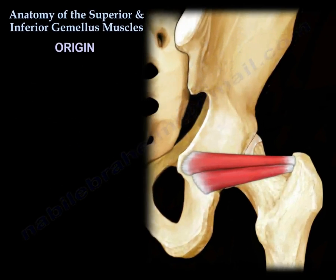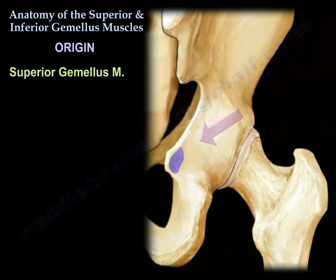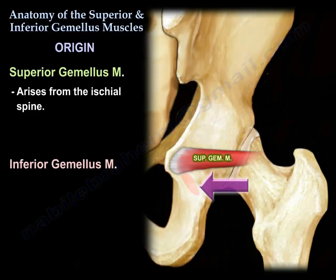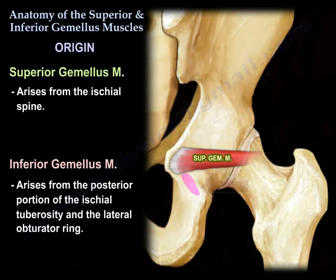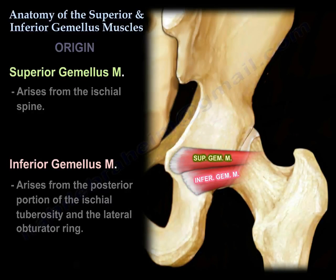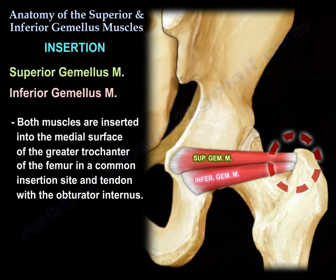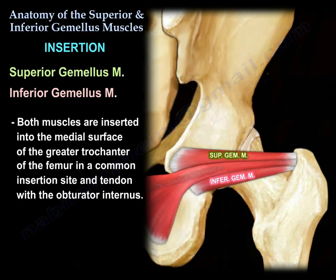Origin: the superior gemellus arises from the ischial spine. The inferior gemellus arises from the posterior portion of the ischial tuberosity and the lateral obturator ring. Both muscles are inserted into the medial surface of the greater trochanter of the femur, in a common insertion site and tendon with the obturator internus.